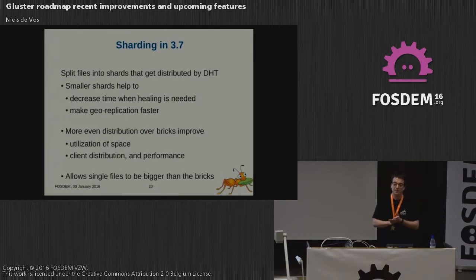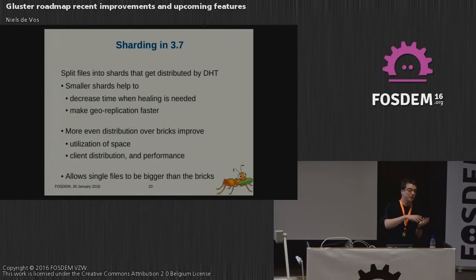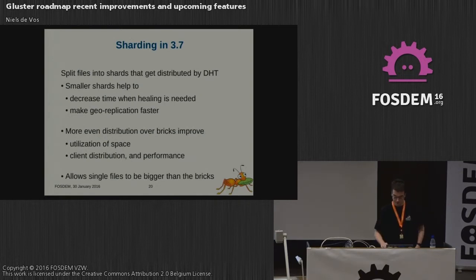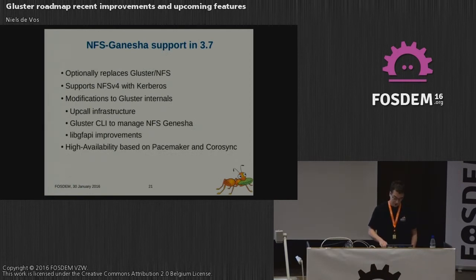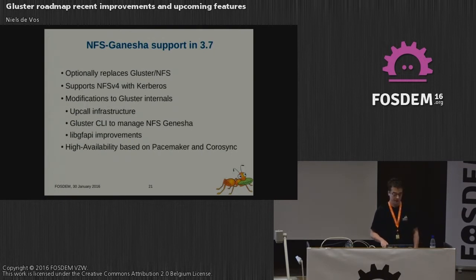If you want to see sharding in action or have more questions about it, come see me after the talk or go to the Gluster booth — we're in the K building next to the FSFE. Especially if you are interested in virtualization workloads, the oVirt guys are there as well and they really use sharding for their use case. NFS-Ganesha is a user-space NFS server, and we tend to deprecate Gluster NFS — the NFS version 3 server — because we don't want to implement all the features that NFS has in our own NFS server. We just want to use NFS-Ganesha and help the community evolving that project.